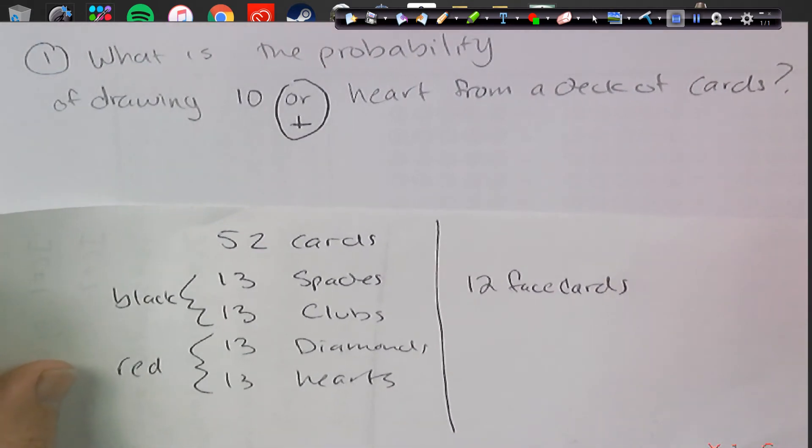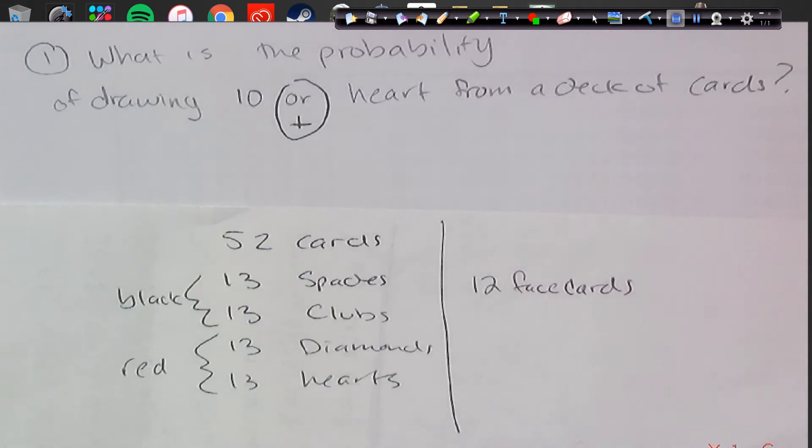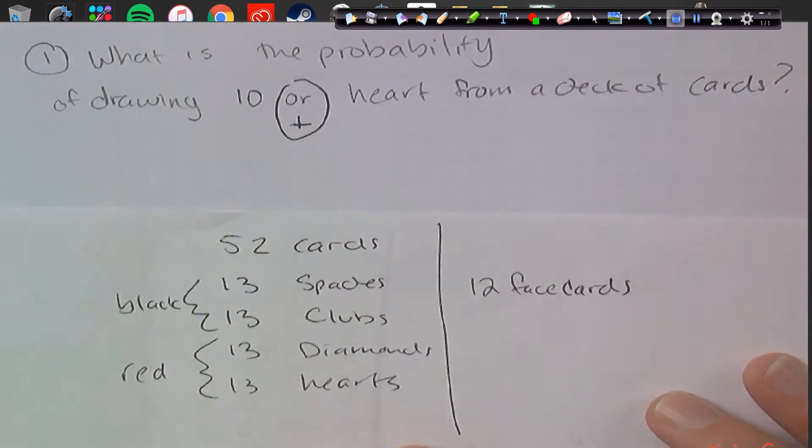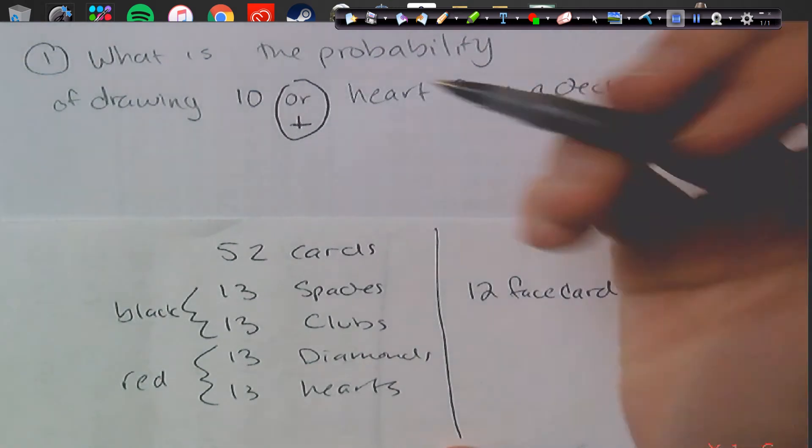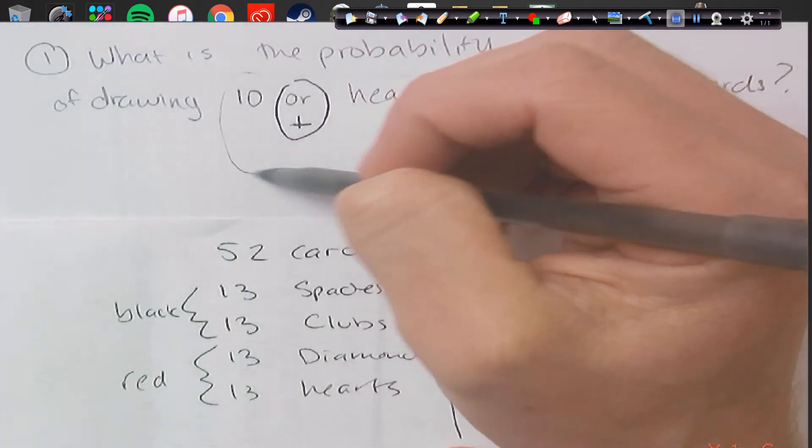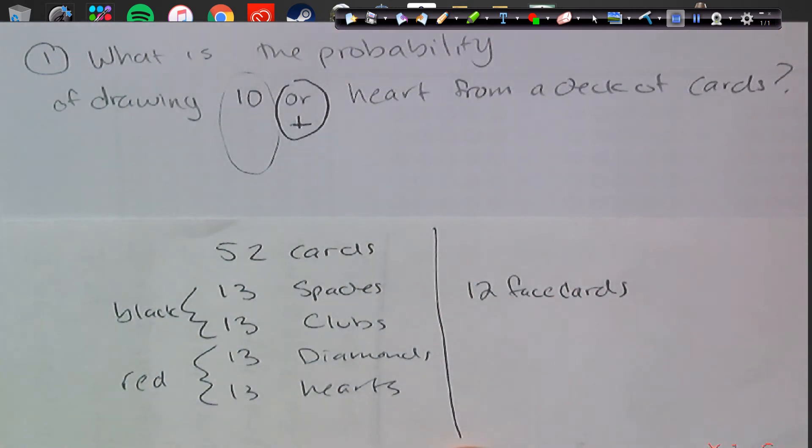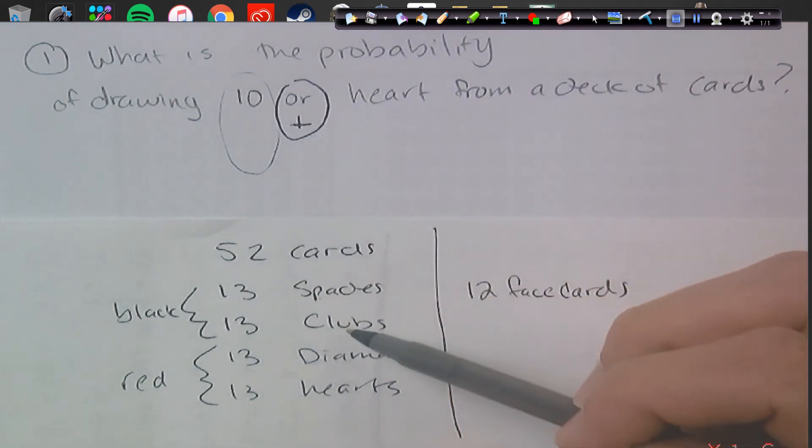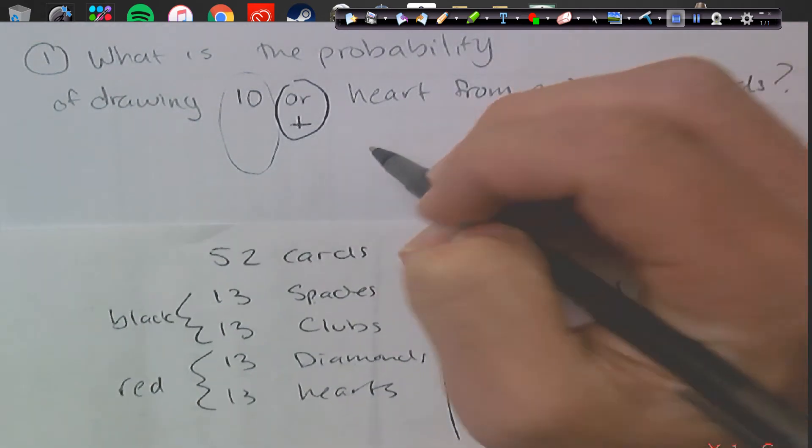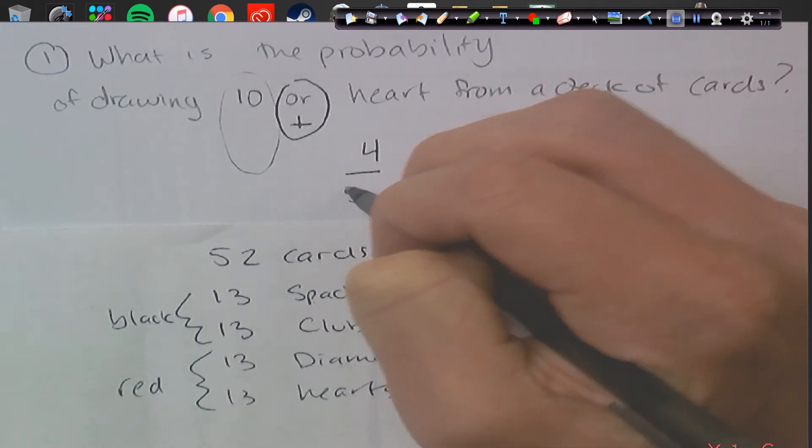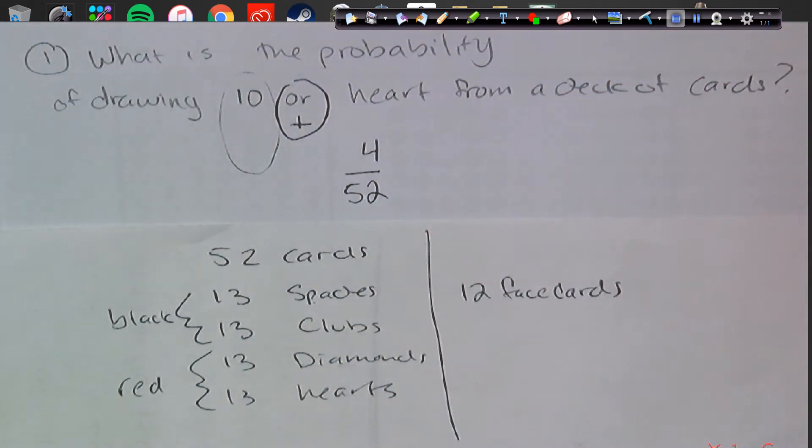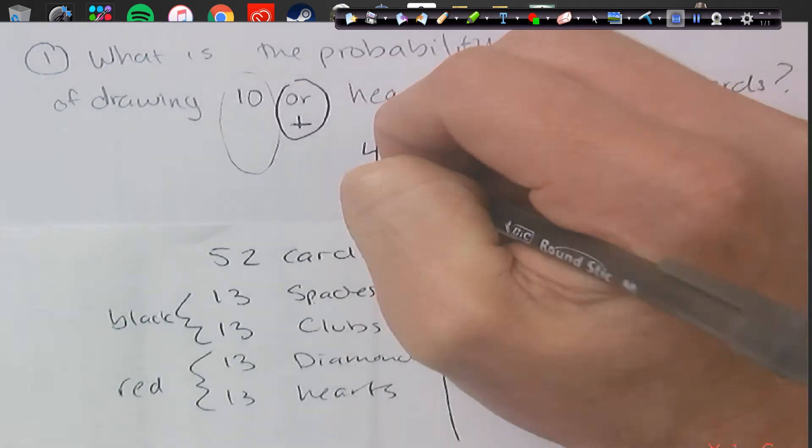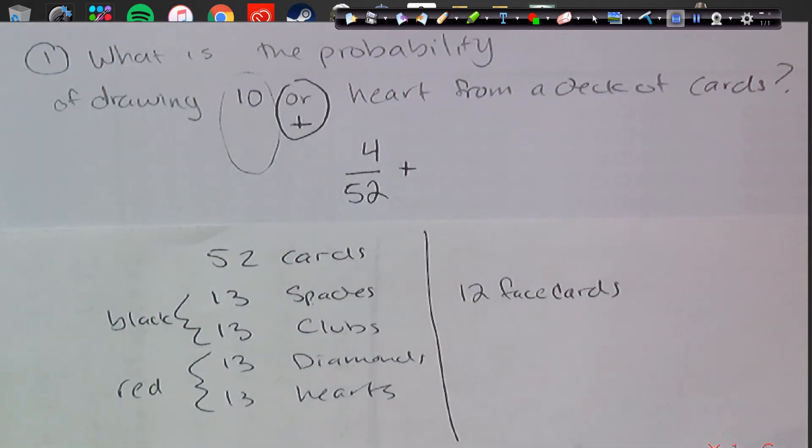We have 52 cards, 13 are hearts, and there's one 10 for each club, or sorry, one for each of these. So this is actually kind of a difficult question. So let's just take a look at the probability of this guy first. So how many 10s are in a deck of cards? Well, there's a 10 of spades, 10 of clubs, 10 of diamonds, 10 of hearts. So we have 4 out of 52 cards are 10s, plus how many hearts do we have? Well, we have 13 hearts.